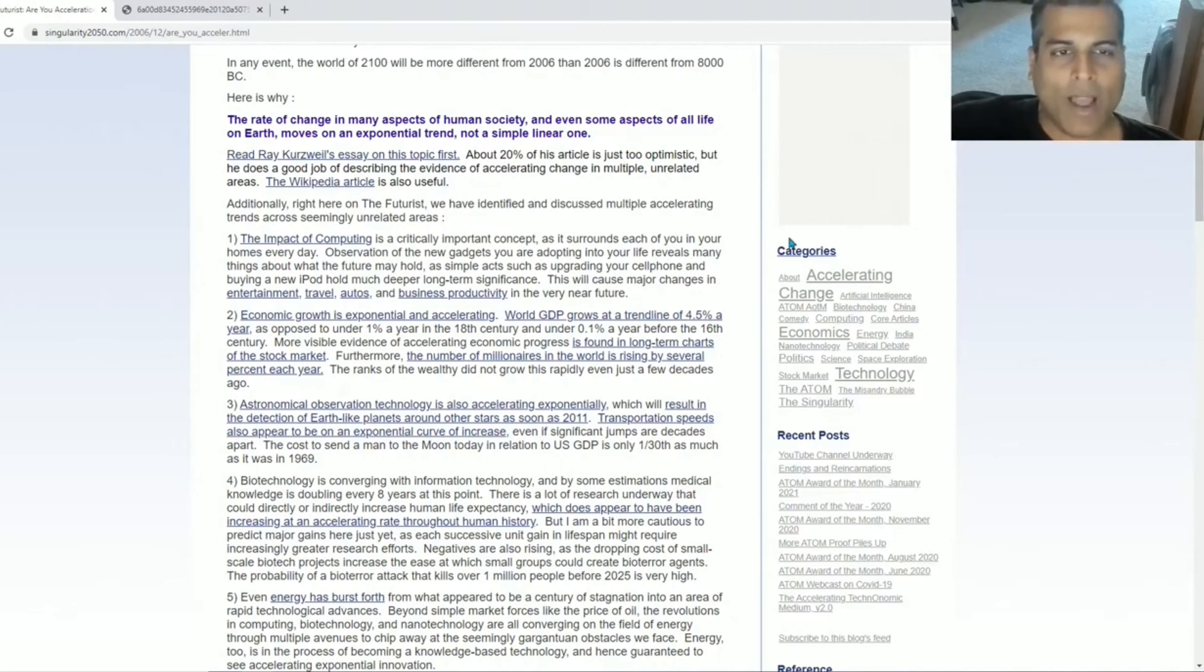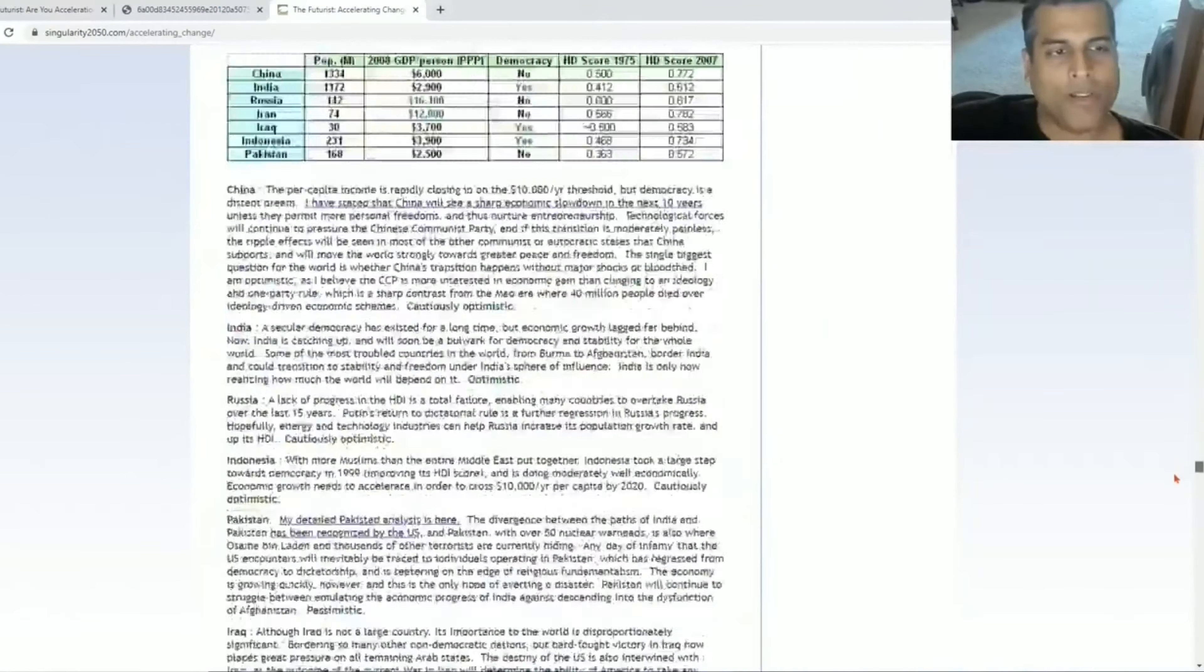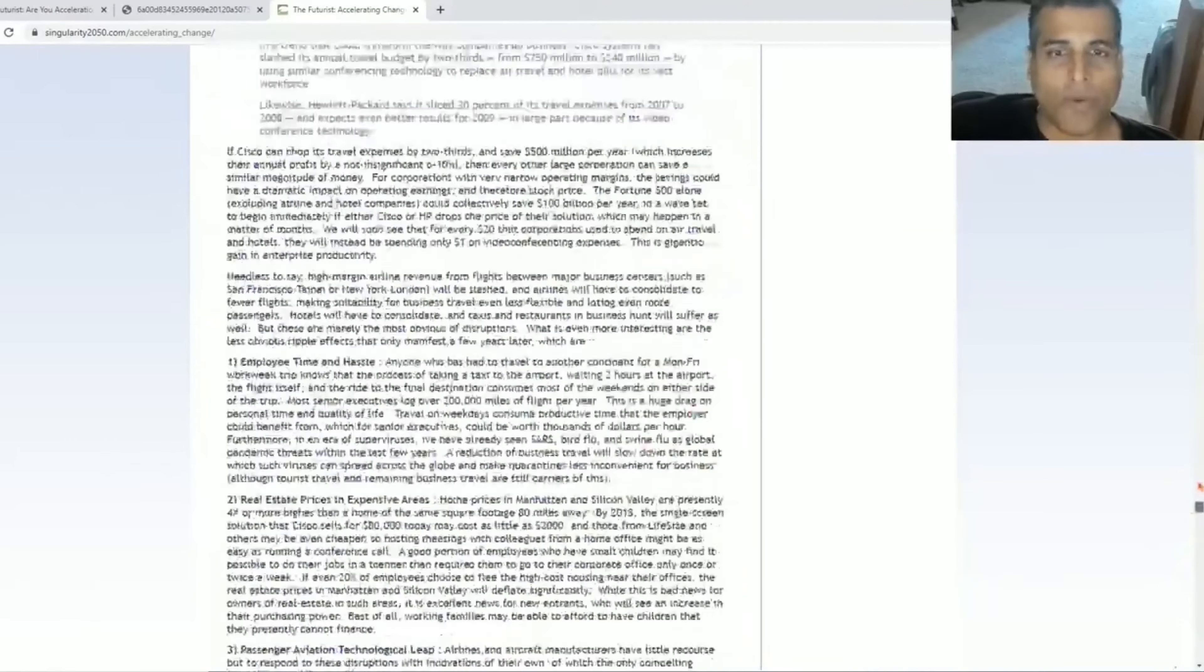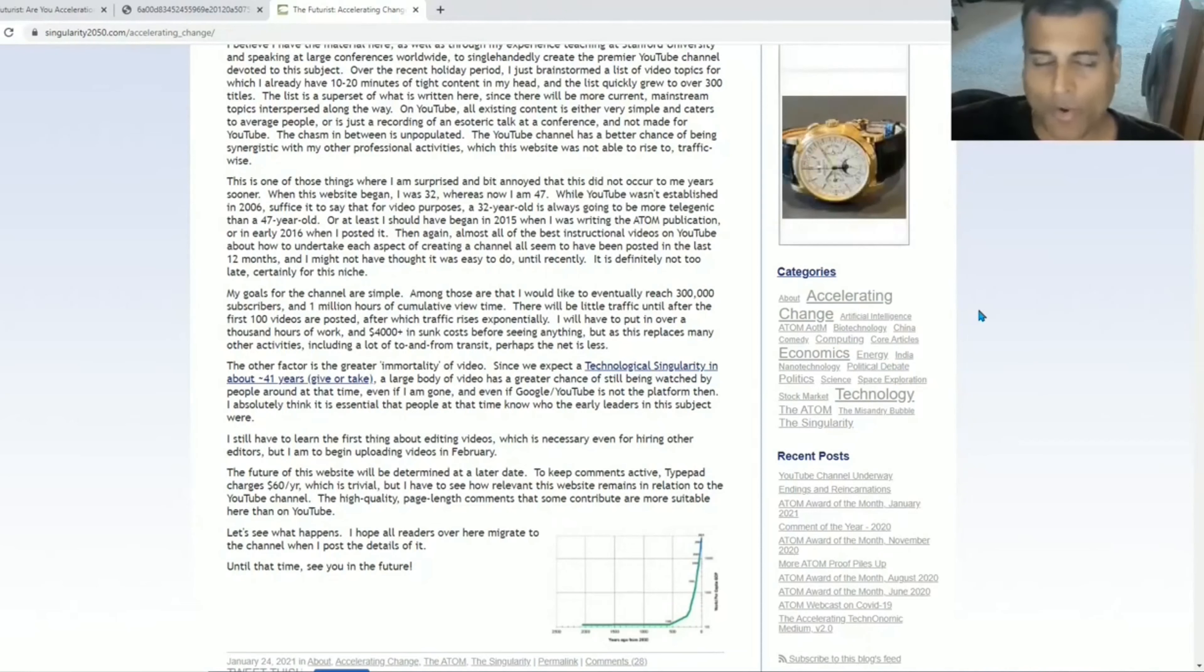If you look at my cloud categories on The Futurist, you'll see accelerating change as the biggest font item in the category cloud. That means I have the most articles about the accelerating rate of change. I would urge anyone who wants to look at the older articles to click on that link. Many of these articles are also going to be converted into YouTube videos on this channel. This was 15 years of blogging where you can learn about how accelerating change affects biological evolution, technological progress, and economic progress, all three of which are related.